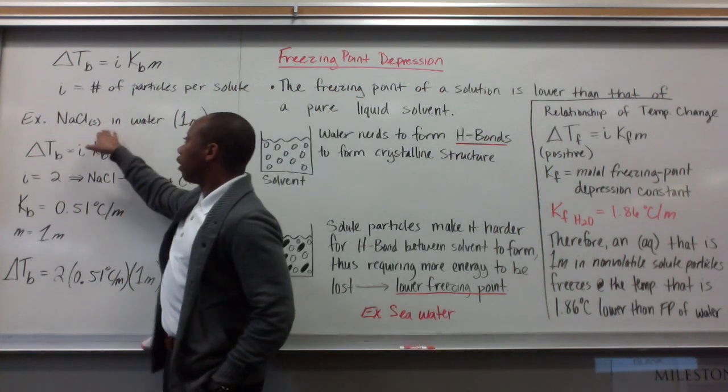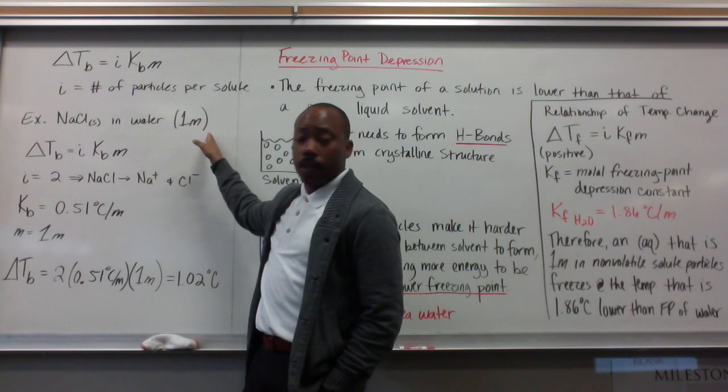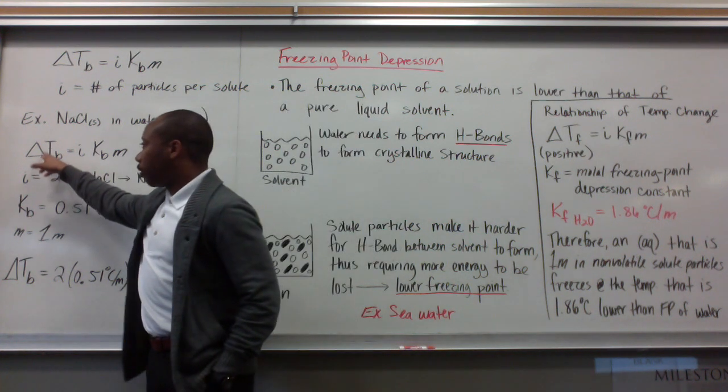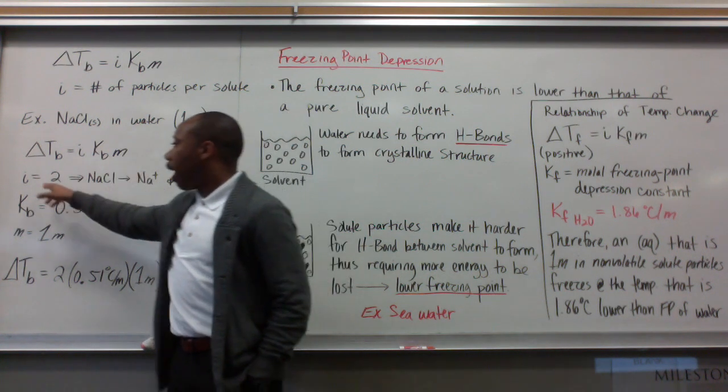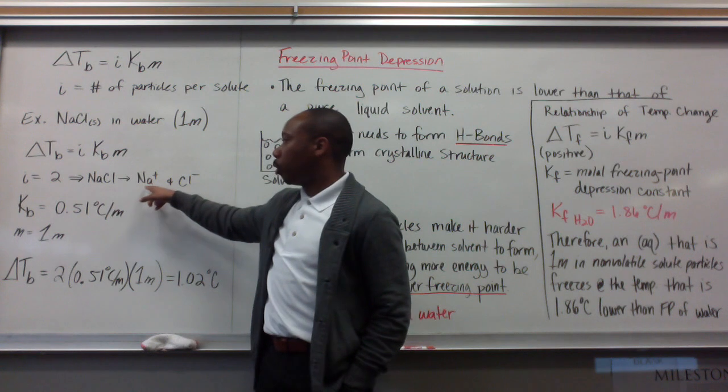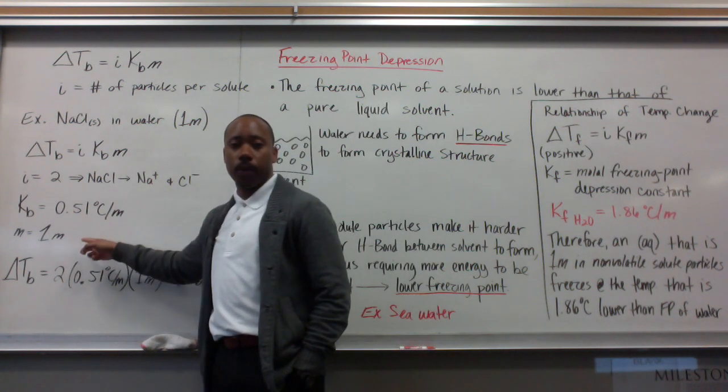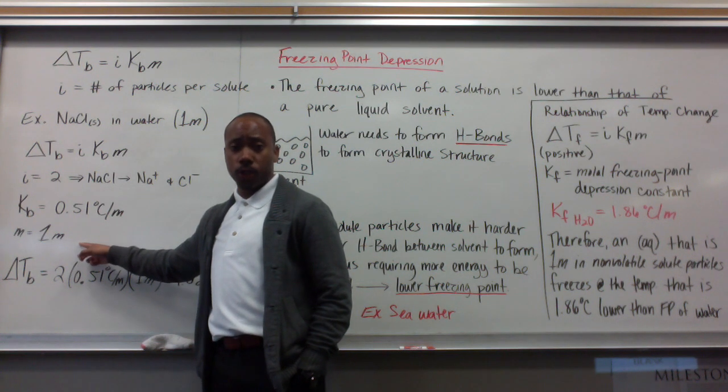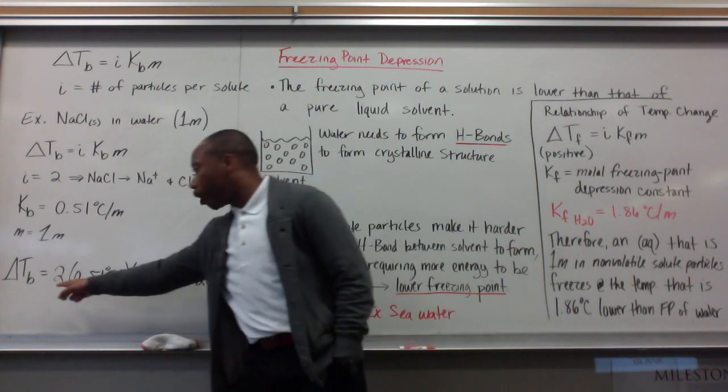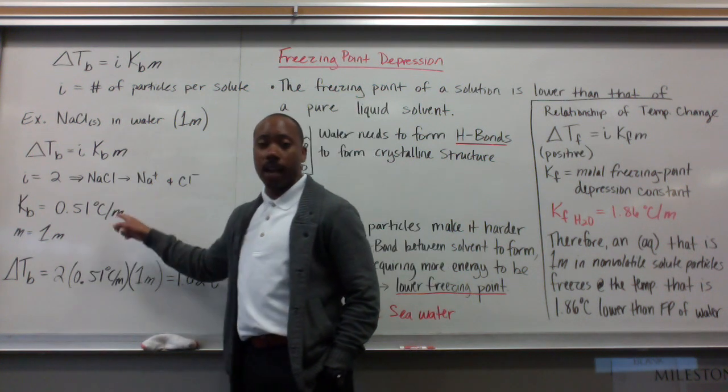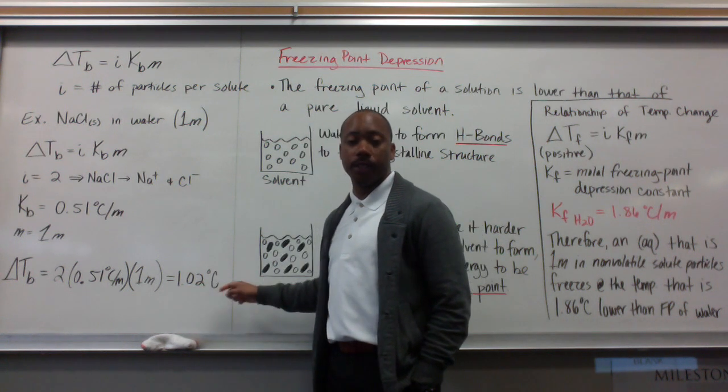Another example, if I have NaCl in water, I dissolved it, and it formed a one molal solution. Then, delta T sub B equals i times K sub B times molality. i is equal to two because NaCl dissociates into Na plus and Cl minus. K sub B is what it is, and we have a one molal solution. We plug in all those values, and since we have two ions that dissociate from the NaCl, our boiling point elevation doubles. It's 1.02 degrees Celsius.